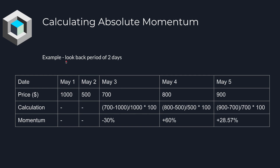In this example, we're going to use a lookback period of two days. So we have five days of pricing data here from May 1st to May 5th. To calculate the momentum of May 1st and May 2nd, we would need pricing data from April, but we have enough data to calculate the momentum on May 3rd. The calculation is a simple percentage change calculation. So we can see from May 1st to May 3rd, there's a negative 30% decrease in price.